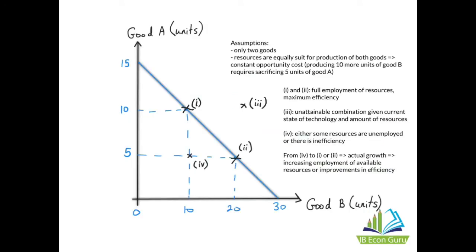This is what a production possibilities curve looks like when we are assuming constant opportunity costs. The assumptions of the model are that there are only two goods being produced — good A and good B. We're also assuming that the resources are equally suited for the production of both goods. There is constant opportunity cost: producing 10 more units of good B always requires sacrificing five units of good A.